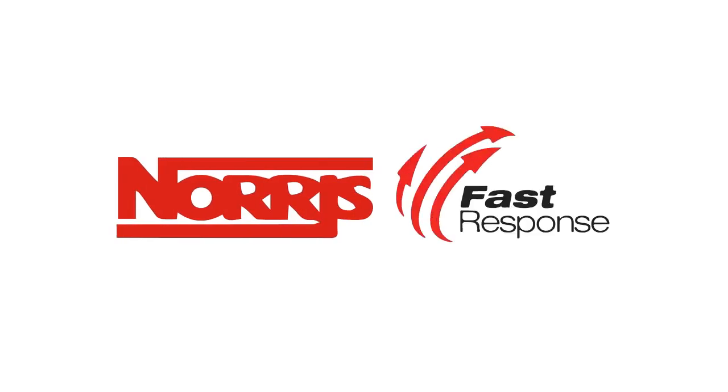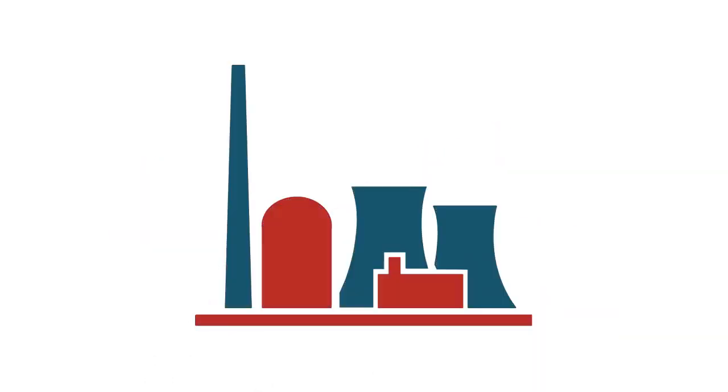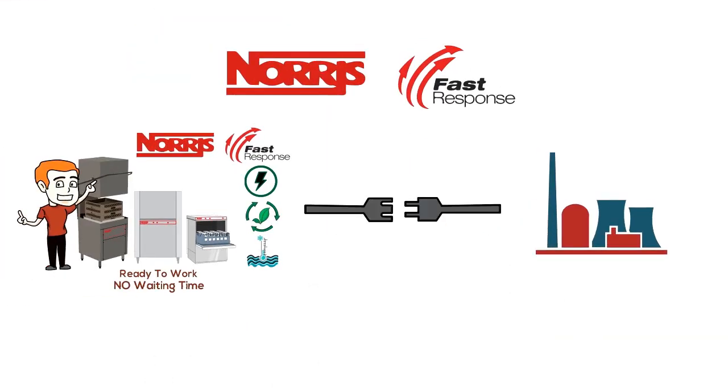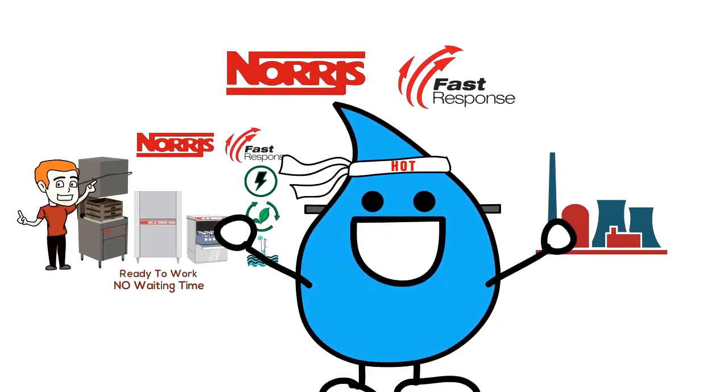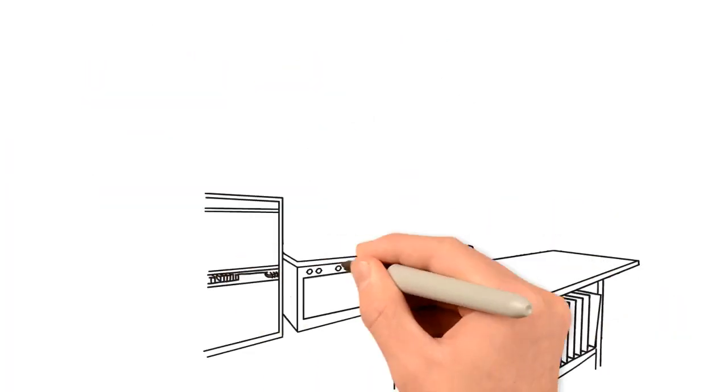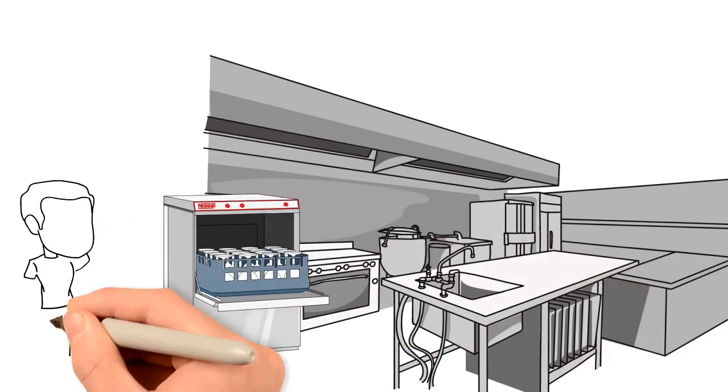The Norris fast response operating system maximizes the use of your available power to make sure the dishwasher always has compliant hot water on demand. This leaves your kitchen's existing hot water for other important things.